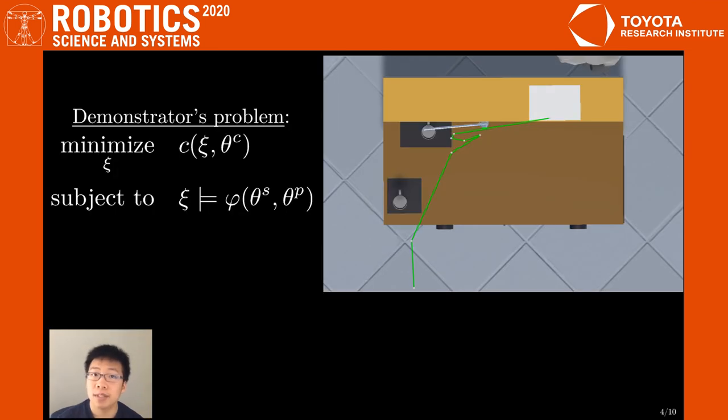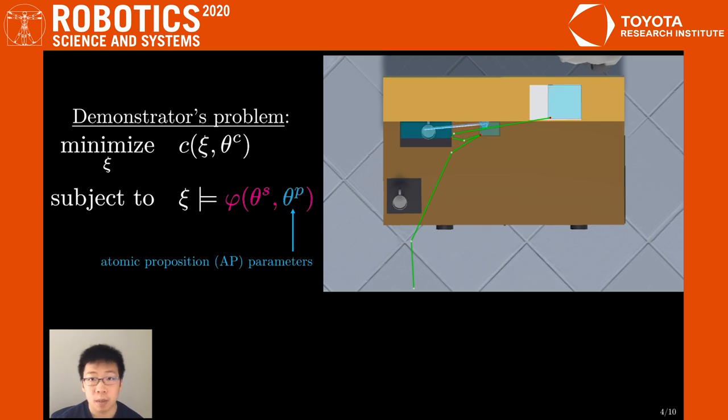Formally, we assume the demonstrator is solving constrained optimization, where phi is an LTL formula. The task is embedded in this formula, which has two components: the atomic proposition parameters, which define relevant low-level regions in the state space, and the logical structure, which defines the temporal and logical task constraints as a function of those low-level APs.